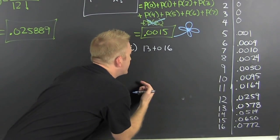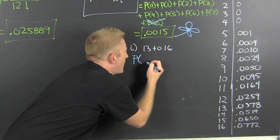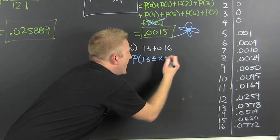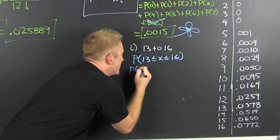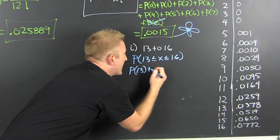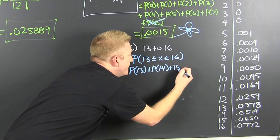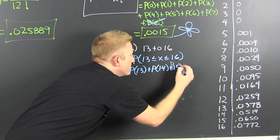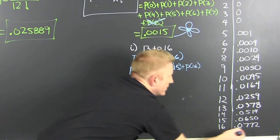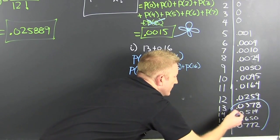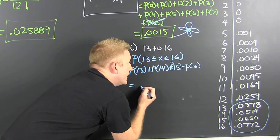We're looking for 13 to 16, which means the probability that 13 is less than or equal to X is less than or equal to 16, inclusive on the endpoints. So this is the probability of 13, plus the probability of 14, plus the probability of 15, plus the probability of 16. I go ahead and add all of these: 13, 14, 15, and 16.